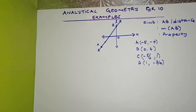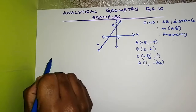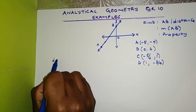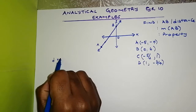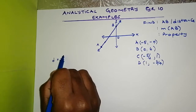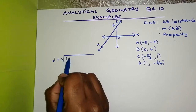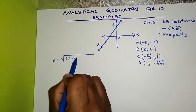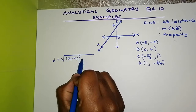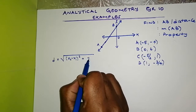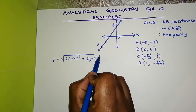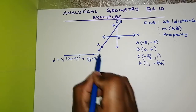Firstly, let's find the distance AB. We have learned this. D equals the square root of (X2 minus X1) all squared, plus (Y2 minus Y1) all squared.